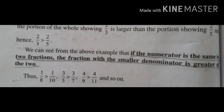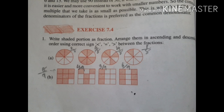Next one: 4 by 9 and 4 by 11. Again the numerator is the same. So whichever denominator is small — 9 is smaller than 11 — so 4 by 9 is greater than 4 by 11.